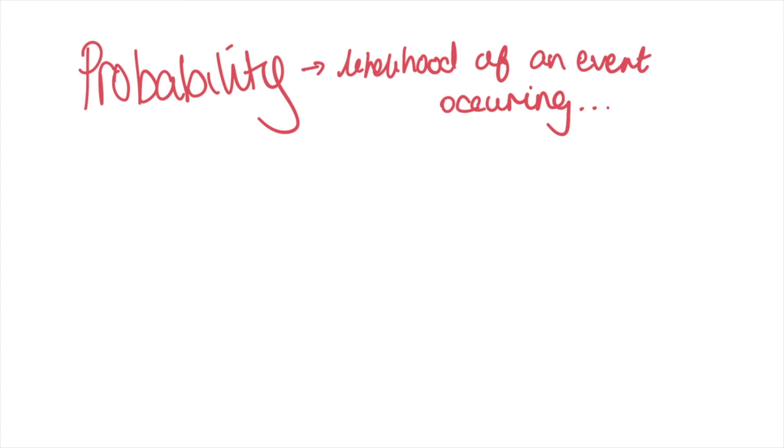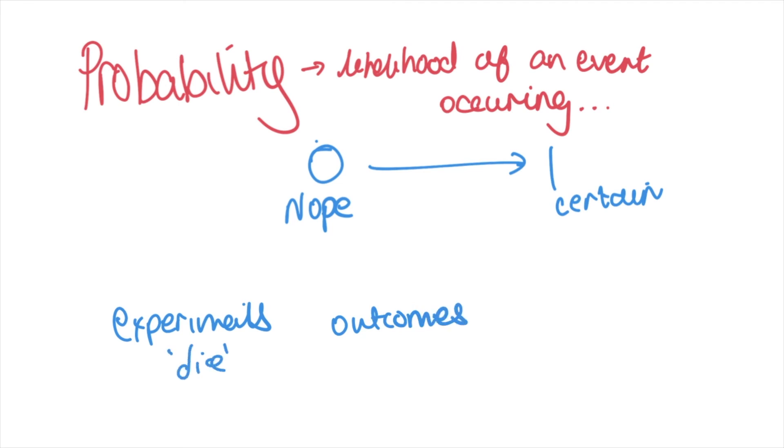And then we come to probability. Probability is the likelihood of an event occurring. We measure probability from 0 to 1, with 1 meaning 100% certain that's going to happen and 0 meaning not going to happen at all. We complete in maths probability experiments, so maybe throwing a dice is considered an experiment, picking a marble out of a bag is an experiment. In these experiments there are numerous outcomes. So if you were throwing a dice, that's the experiment, the outcomes can be 1, 2, 3, 4, 5, 6. This is also what we call our sample space.